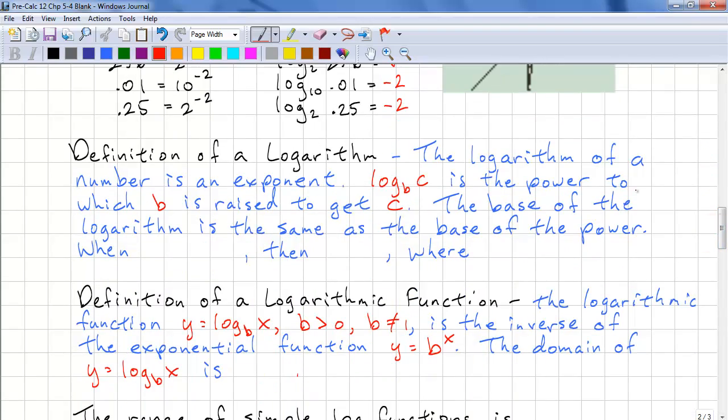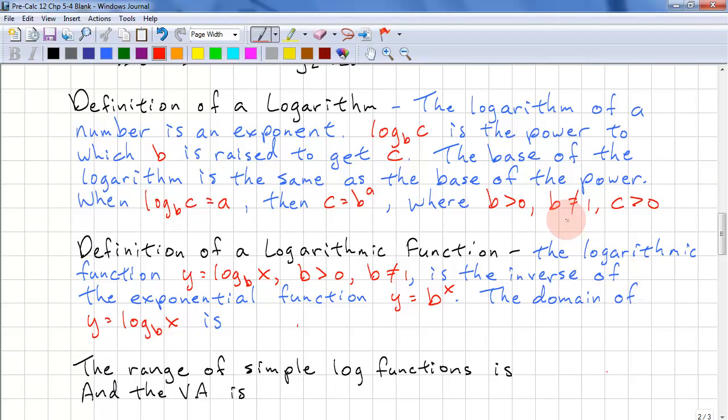Here's your formal definition of logarithm. The logarithm of a number is an exponent. Log b of c is the power to which b gets raised to to get c. The base of the logarithm is the same as the base of the power. When we have log b of c equal to a, then c is equal to b to the power of a. And we have conditions where b is greater than 0, b does not equal 1, and c is greater than 0. The reason we don't have b equal to 1 is because if we have the base as 1, the only value we can actually evaluate is c is equal to 1.